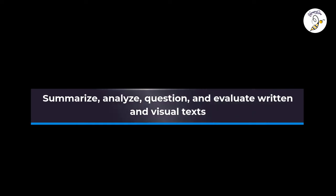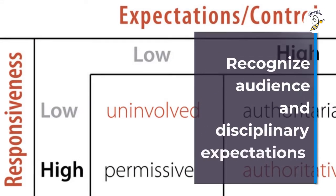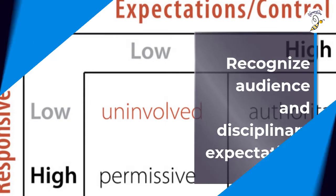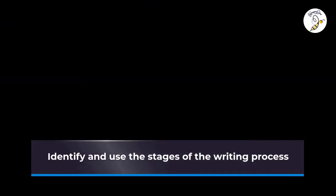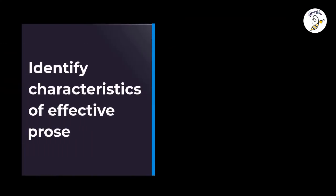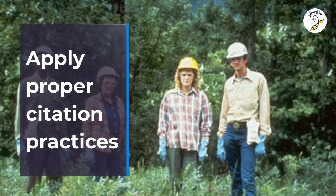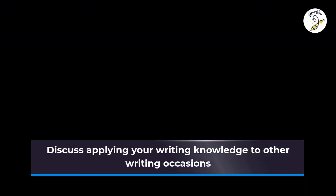Learning Outcomes: Summarize, analyze, question, and evaluate written and visual texts. Argue and support a position. Recognize audience and disciplinary expectations. Identify and use the stages of the writing process. Identify characteristics of effective prose. Apply proper citation practices. Discuss applying your writing knowledge to other writing occasions.